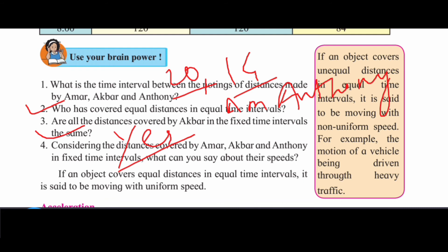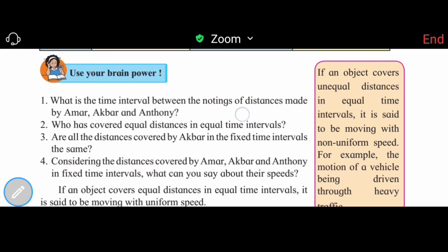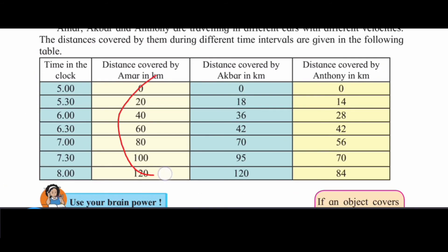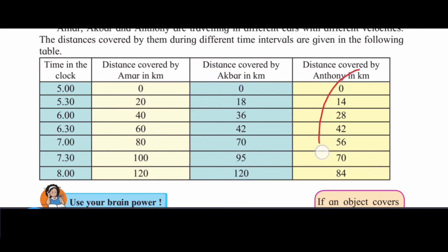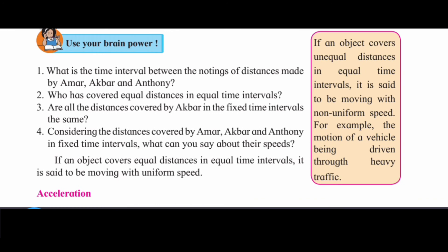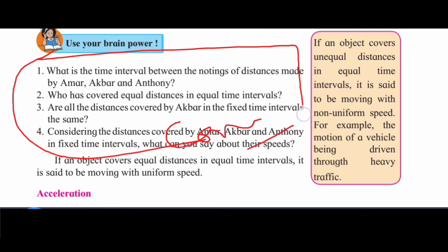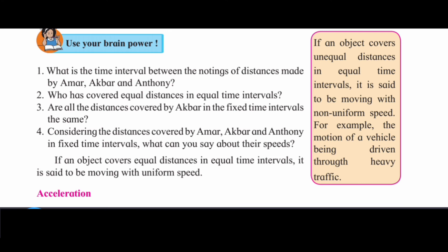Considering the distances covered by Amar, Akbar, and Anthony in fixed time intervals, what can you say about their speeds? Amar and Anthony have constant speed. If an object covers equal distance in equal intervals of time, it is said to have uniform speed.